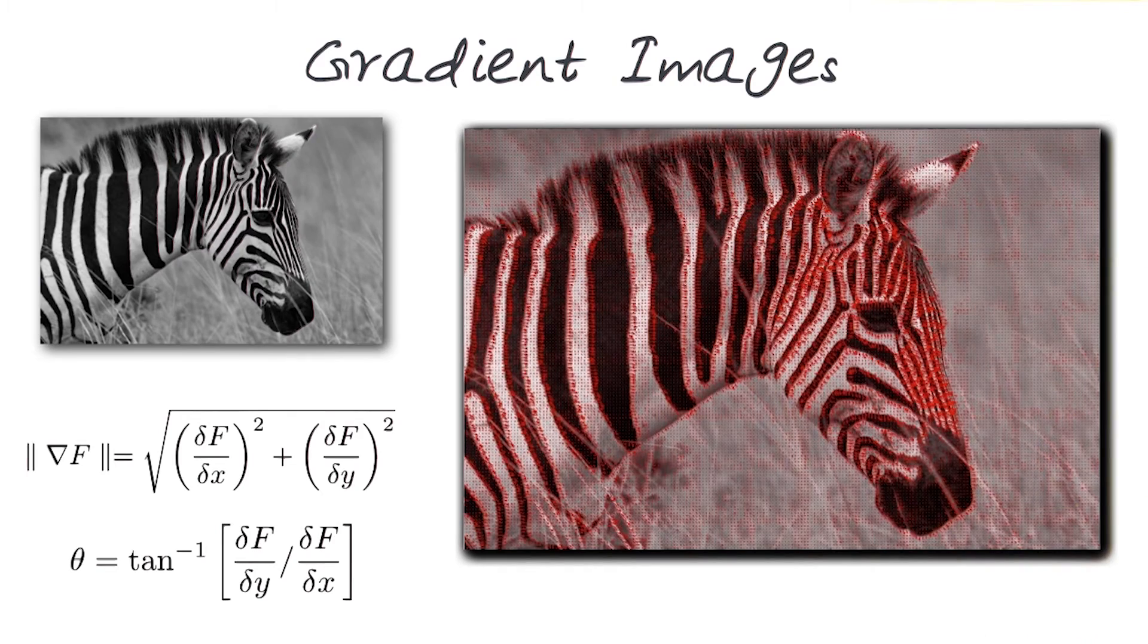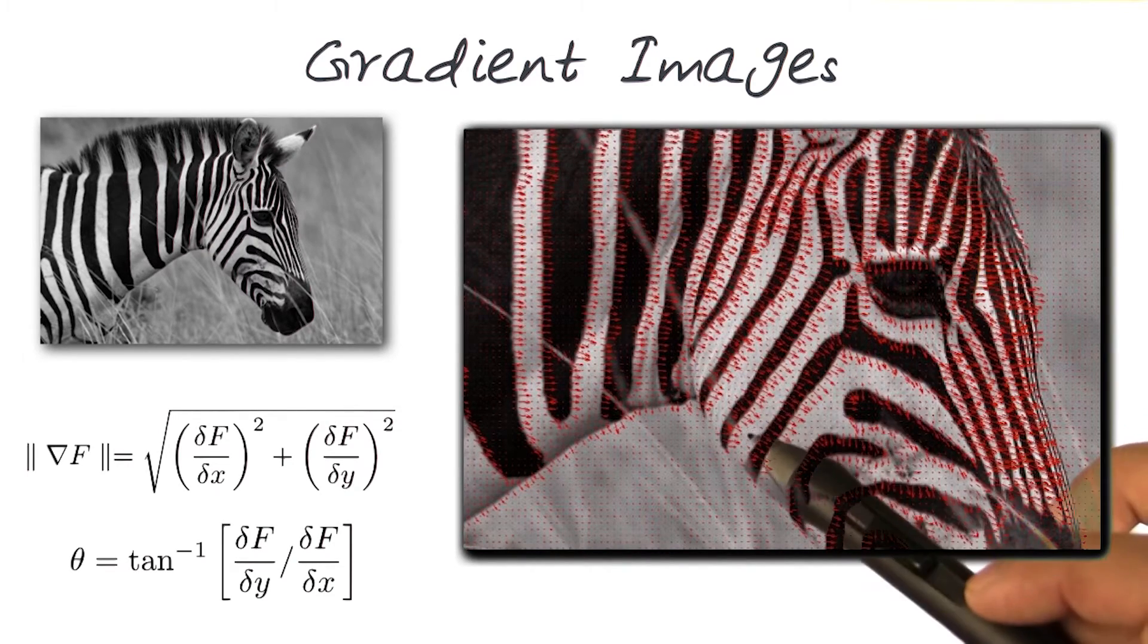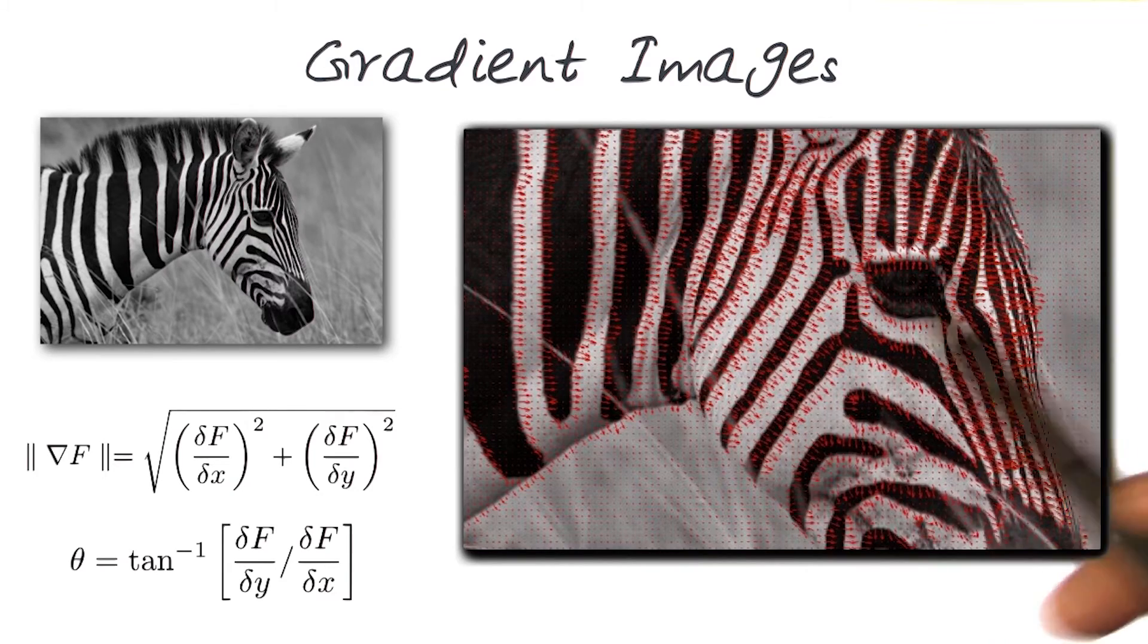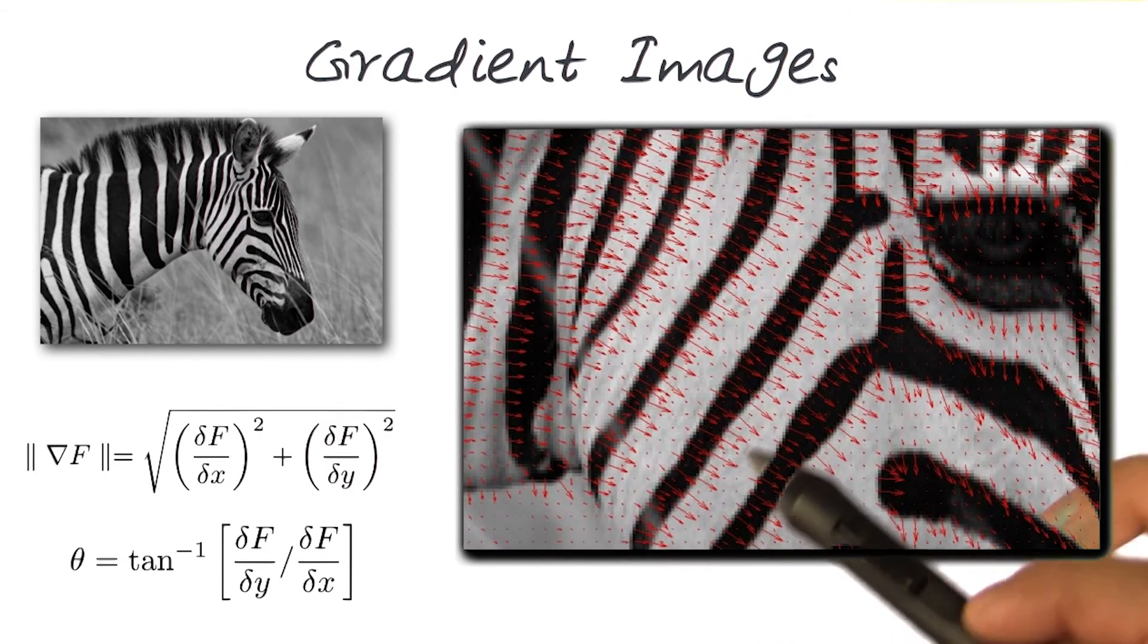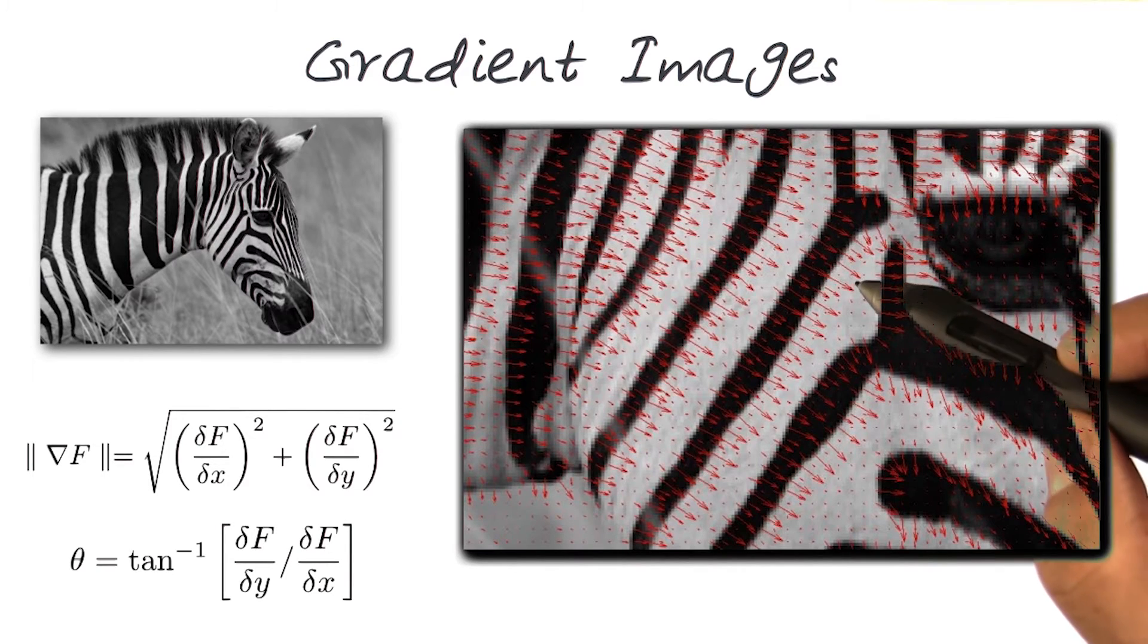I've shown this with a zebra image here. Of course, it's hard to see, so let's zoom in. Zooming in now starts showing you the gradient vectors in a little bit more detail. Even zooming in more, you can now see what I was referring to.